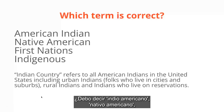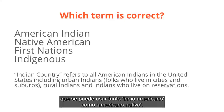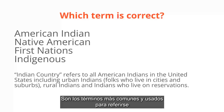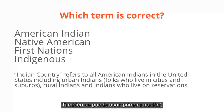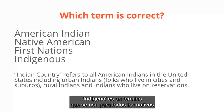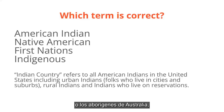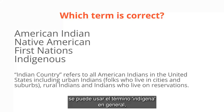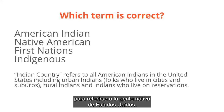Which term is correct — American Indian, Native American, First Nations, or Indigenous? American Indian and Native American are 100 percent interchangeable and are the most common terms used for speaking about Native people from what is today the United States. First Nations can also be used but is much more common to Native folks in Canada. Indigenous is a term used for all Indigenous people from anywhere in the world — Maori from New Zealand, Aborigines from Australia, Pacific Islanders — and it's also an appropriate term when talking about Native people from the U.S.